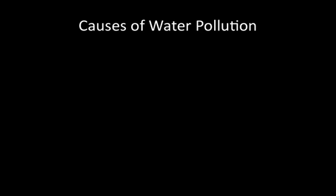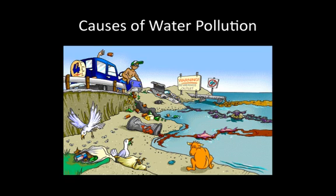Unfortunately, there are many causes of water pollution, and this picture shows just some of them. There is oil and chemicals leaking into the ocean, a sewage outlet — which is like stuff that comes out of your toilet — a man dumping garbage onto the sand, bottles and cans, a car leaking into the ocean, birds eating garbage on the sand, and even a man throwing a can out of his car window.